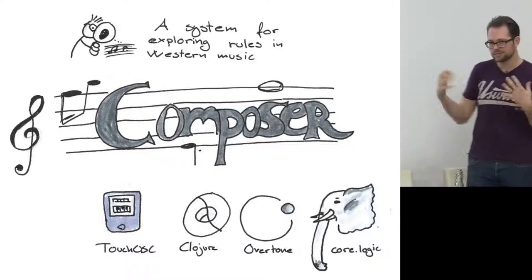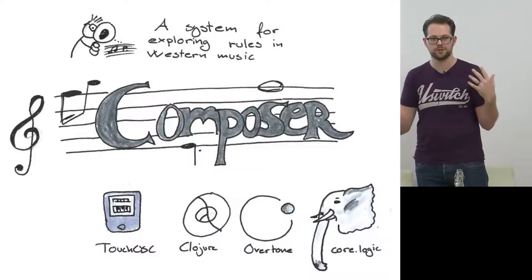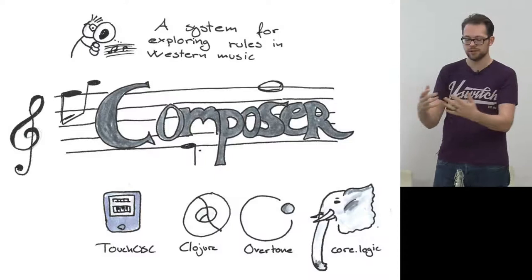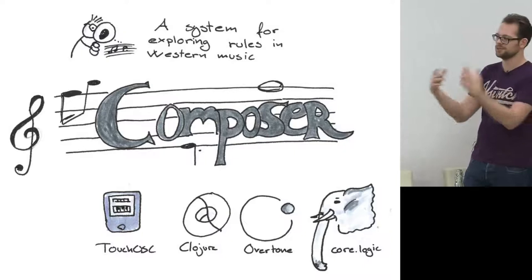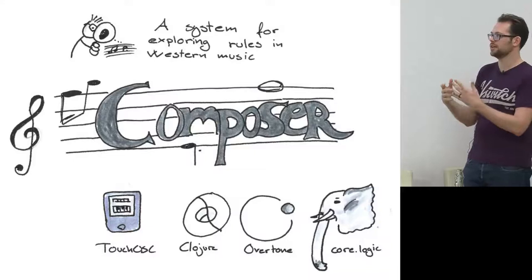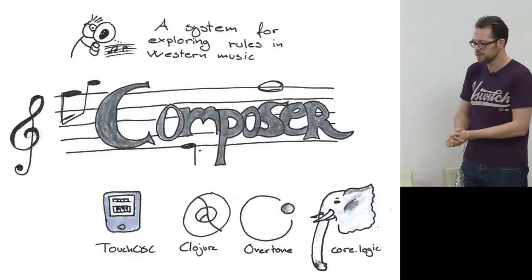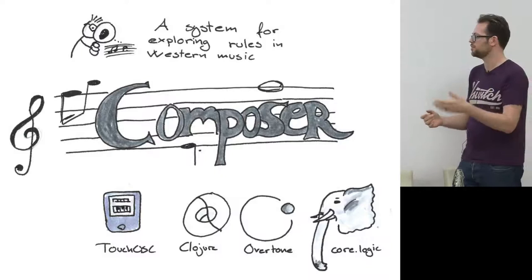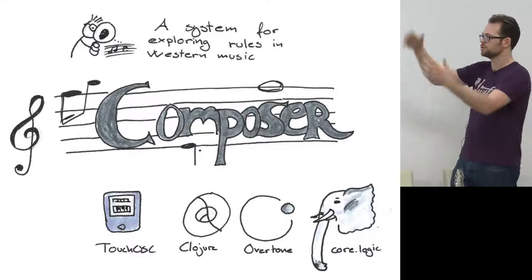Composer is a system for exploring some of the rules that we use in Western music. What sounds nice to us in this part of the world is partly defined by a set of rules that you can study. The Composer system is a tool designed for users to engage with these rules and get an intuitive feel for what they mean — instead of reading textbooks on musical rules, they explore this system and gain an intuitive understanding of the core rules in Western music.